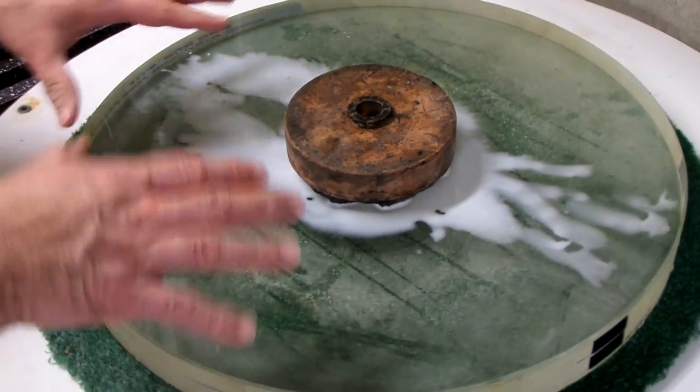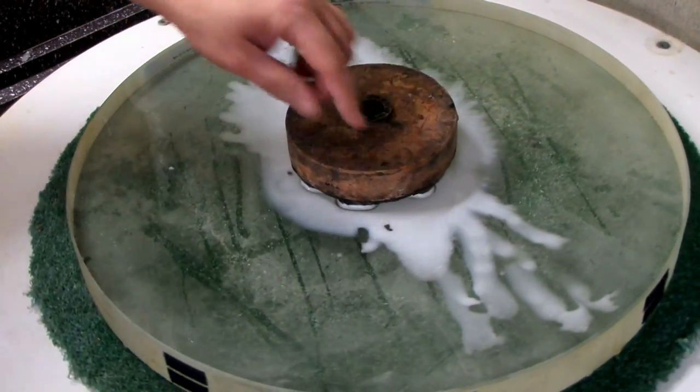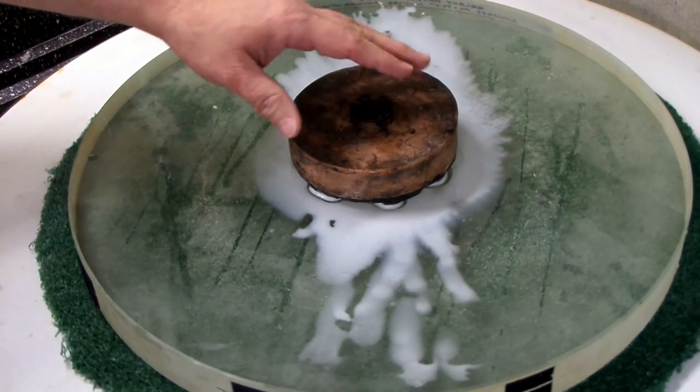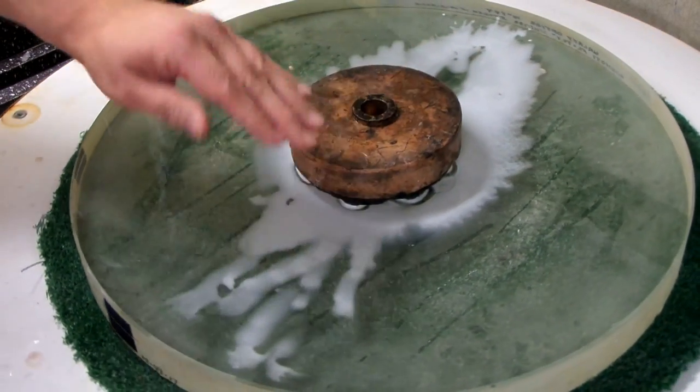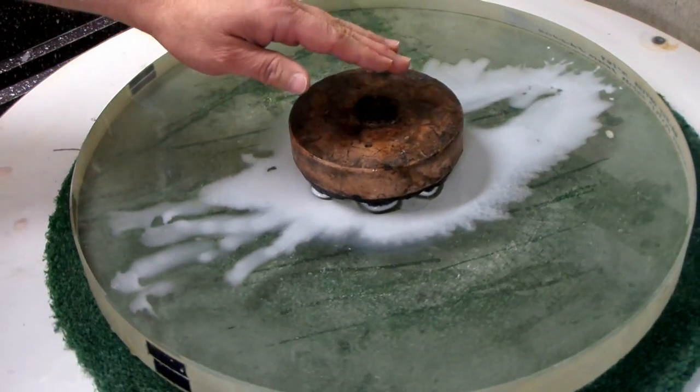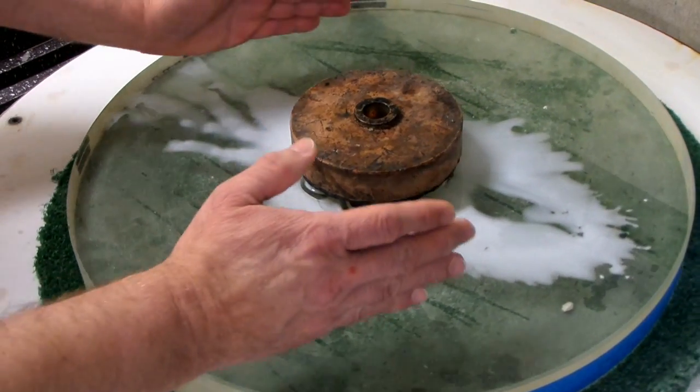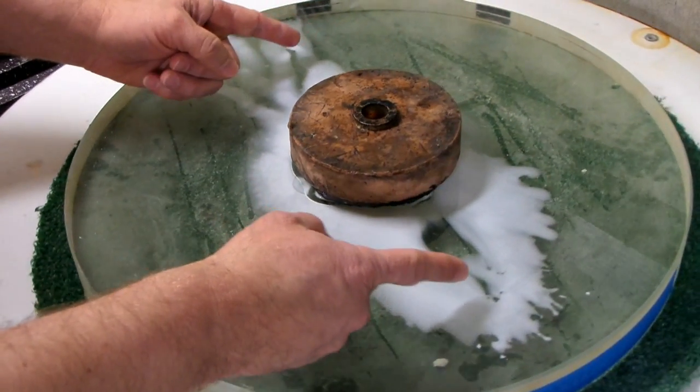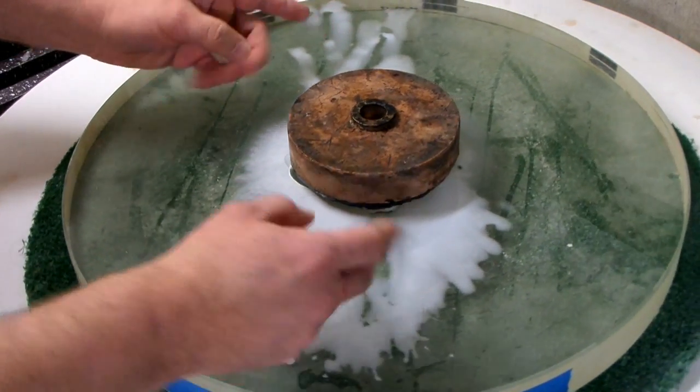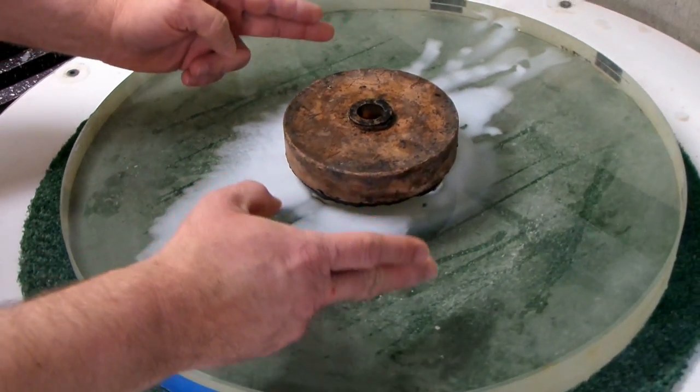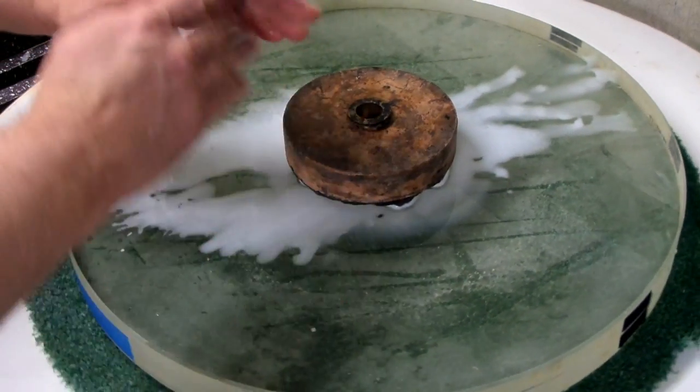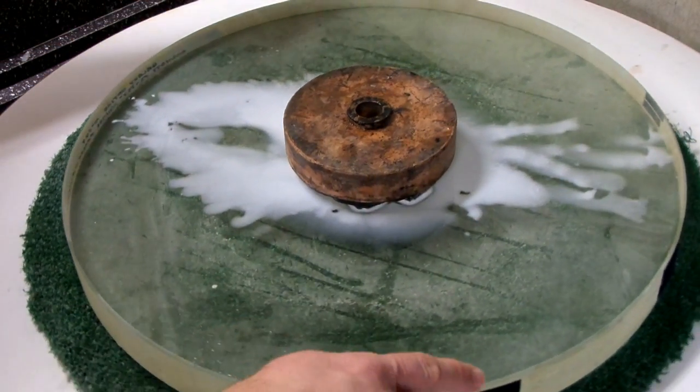This mirror has problems. The biggest problem is that the central zone, the center of this mirror, is severely under corrected. It needs to be much deeper here in the center. Second problem, the mirror is generally under corrected out to about the six and a half inch radius. So I'm going to work the center deeper, then I want to work an area out to here deeper, and then overall the entire mirror is under corrected.